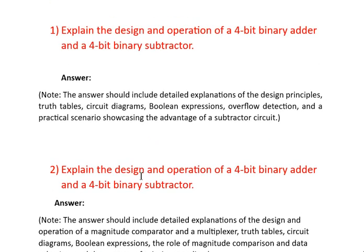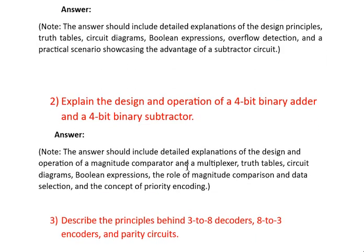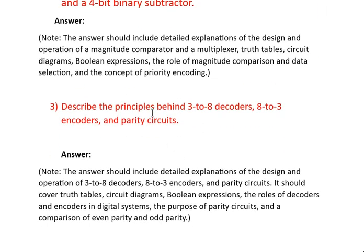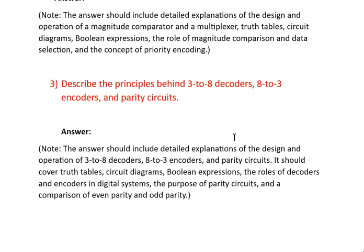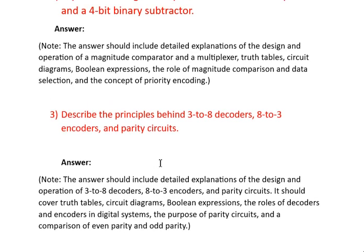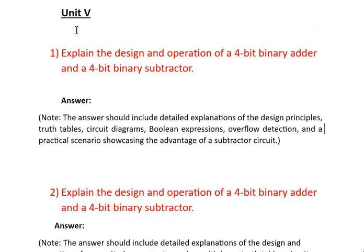The third question from unit 5 is: describe the principle behind a 3-to-8 decoder, 8-to-3 encoder, and parity circuit. Your answer should cover explanation and design of the 3-to-8 decoder, 8-to-3 encoder, and parity circuit. It should include truth tables, circuit diagrams, Boolean expressions, the role of decoders and encoders in digital systems, the purpose of parity circuits, and comparison of even parity and odd parity. If you include all these, you will score 10 out of 10. Completing these three questions means unit 5 is done.